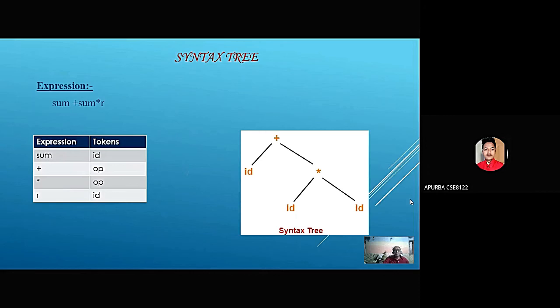Here is the expression: sum plus sum multiply r. Sum is the identifier token, plus is the operator token, multiply is the operator token, and r is the identifier token. This is the syntax tree: identifier multiplied by identifier, then the multiplication added with another identifier. The next slide will be explained by Devamoy.